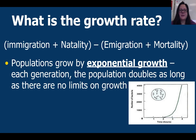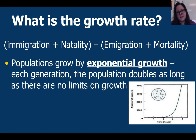So next we have growth rate. The growth rate is measured by the amount of organisms that are immigrating or coming into a population, as well as natality — the number of organisms born. And then you subtract those that are emigrating or exiting a population, plus mortality, those that are dying.